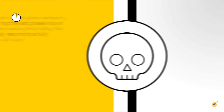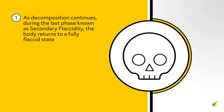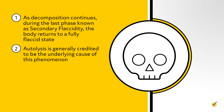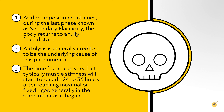As decomposition continues during the last phase, known as secondary flaccidity, the body returns to a fully flaccid state. Autolysis is generally credited to be the underlying cause of this phenomenon. The time frame can vary, but typically muscle stiffness will start to recede 24 to 36 hours after reaching maximal or fixed rigor, generally in the same order as it began.